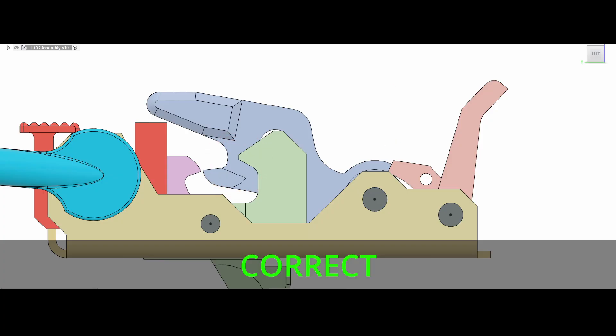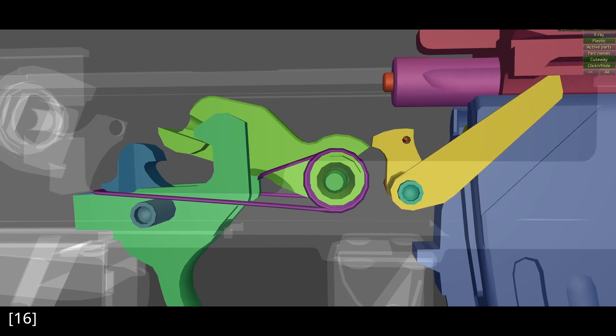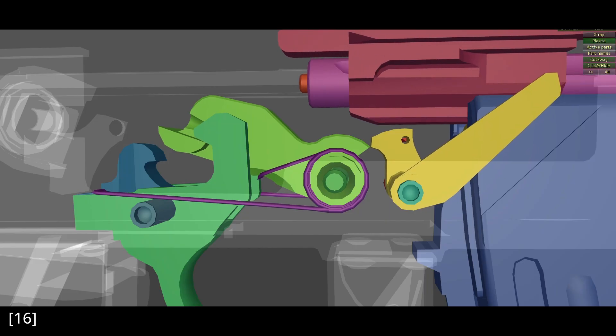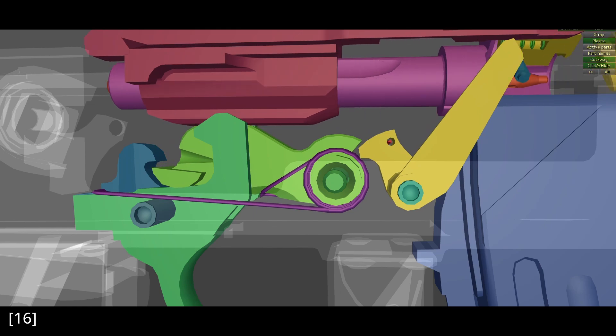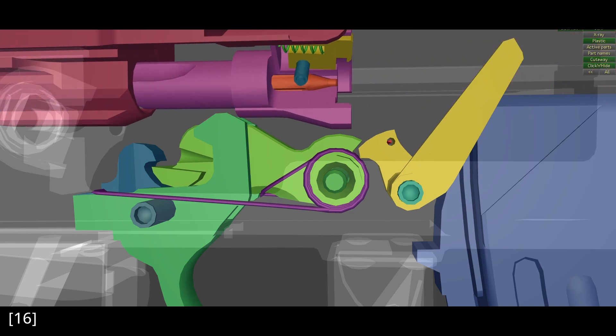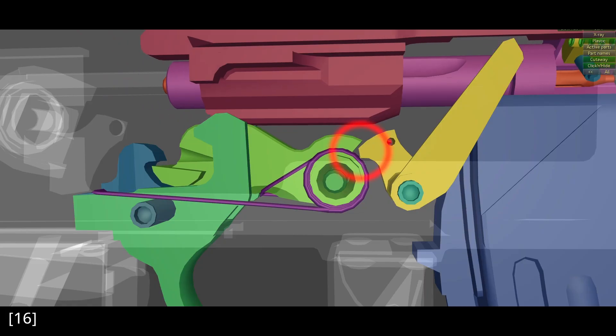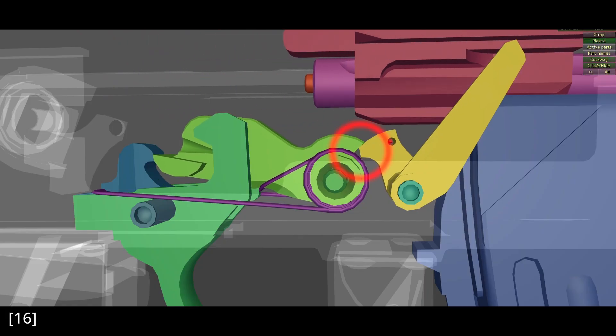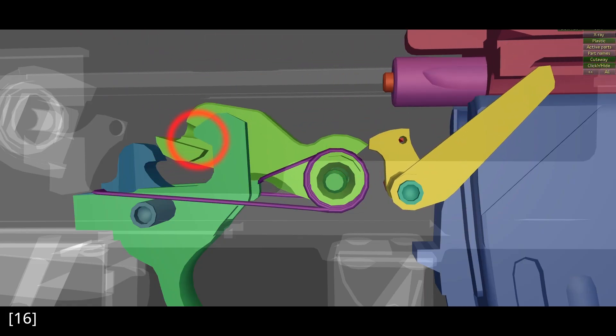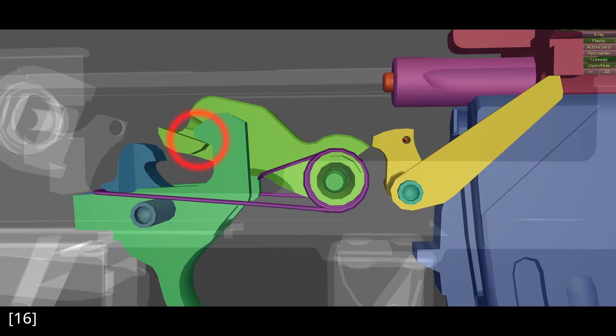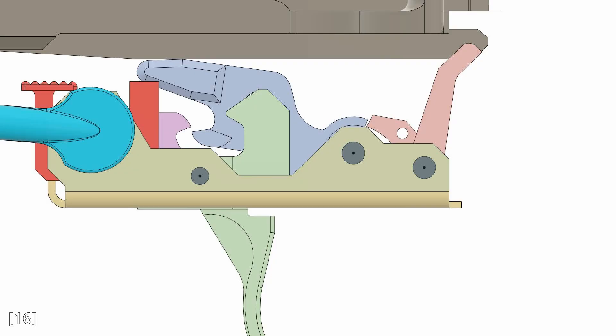This seems like a minor detail, but it is actually very important. To the best of my knowledge, the auto sear has the auto sear engage the hammer before the trigger. And by that I mean, as the hammer strikes forward, it hits the auto sear first and then the trigger. Now that I have modeled the QBZ-191 correctly, it does this as well.